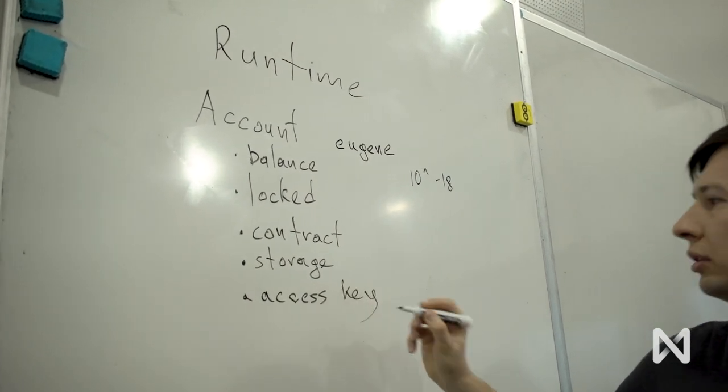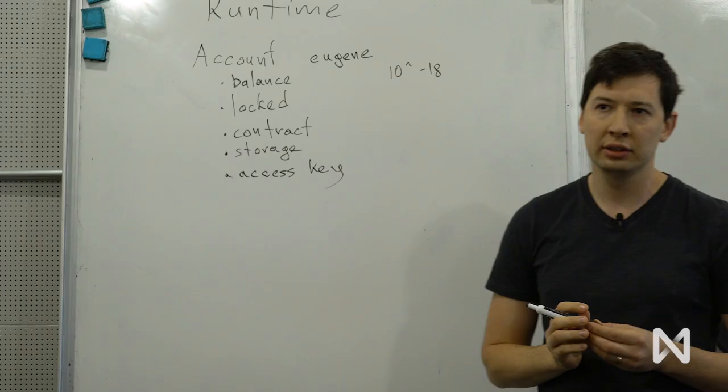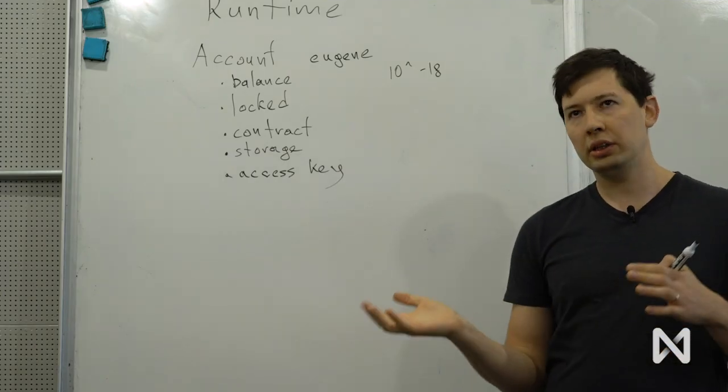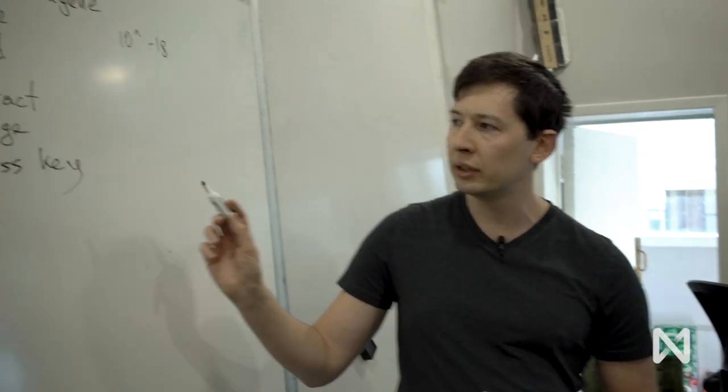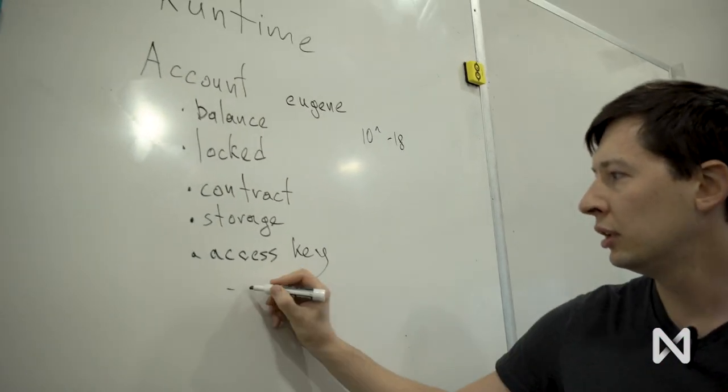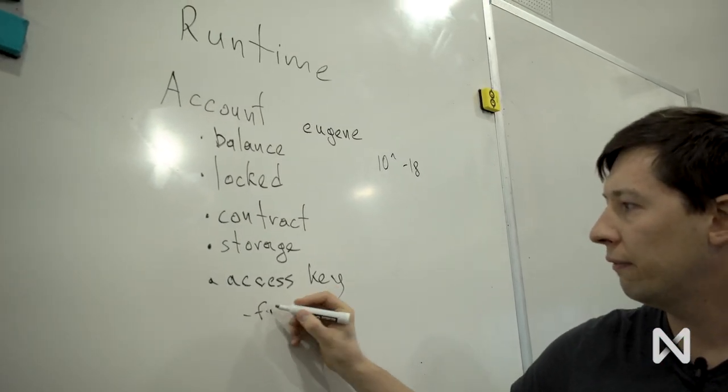So right now, on access keys, there are two types of permissions. First is full permission access key. It acts similarly to Ethereum. It gives full access to your account, so you can do all types of transactions.